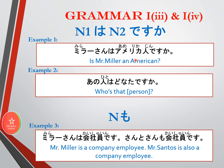The next grammar is how to turn a sentence into a question. For example, 'Is Mr. Miller an American?' — Mira san wa amerikajin desu ka? We have to be careful that the second noun is a noun. You can't mix a person with a country name — you need to add jin to turn America into amerikajin, meaning an American person. We can also ask 'Who is that person?' — Ano hito wa donata desu ka? or Ano hito wa dare desu ka? — where donata is the polite version of dare.